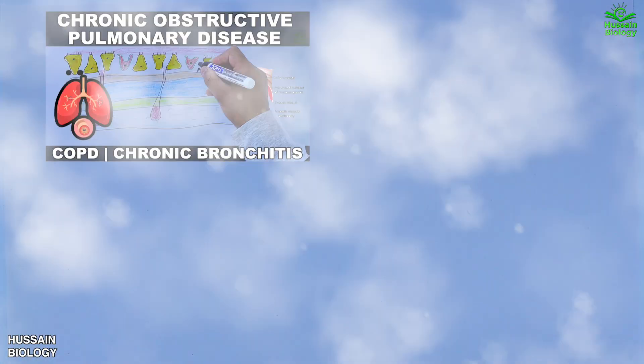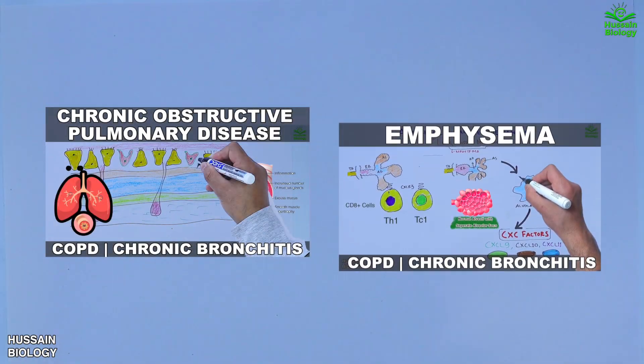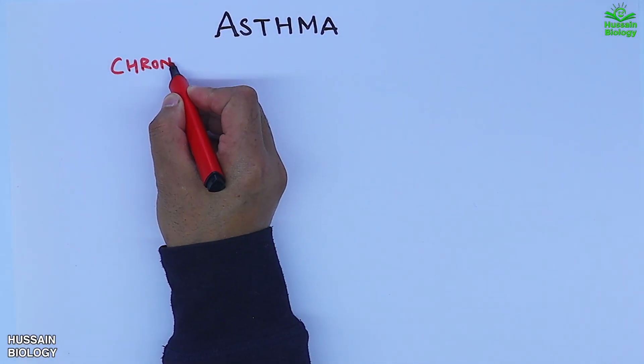In this series of videos we have been discussing chronic bronchitis and emphysema. If you want to watch that video, the link is in the description. Now here we are going to discuss asthma.